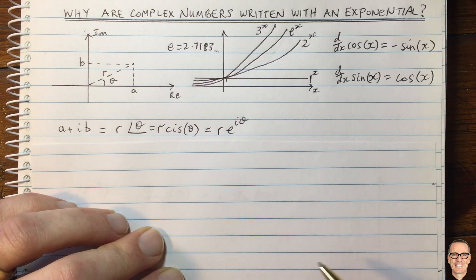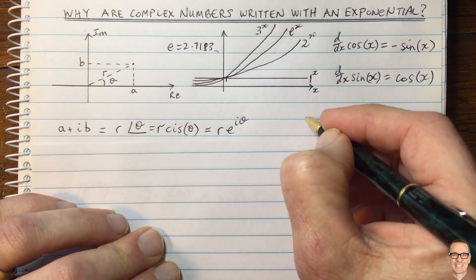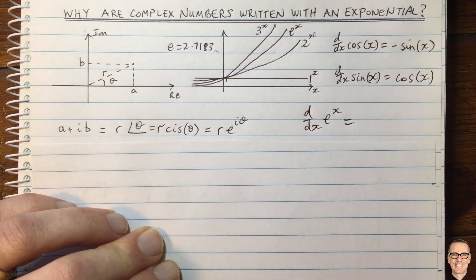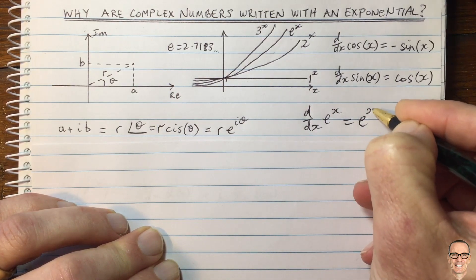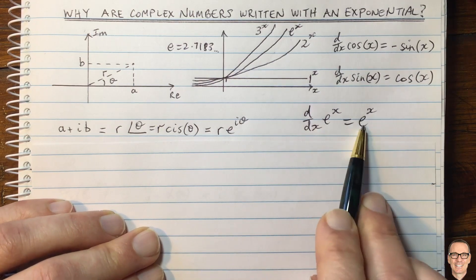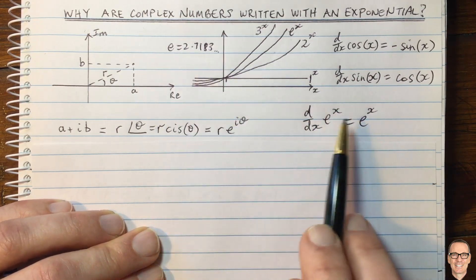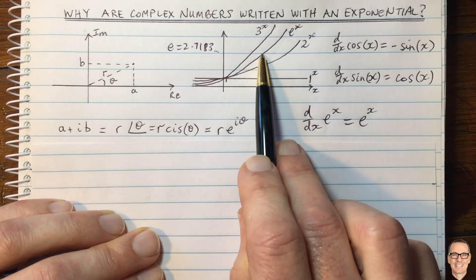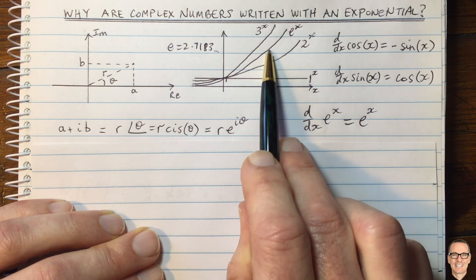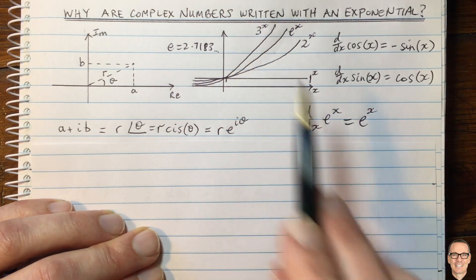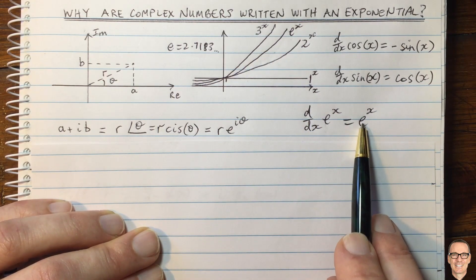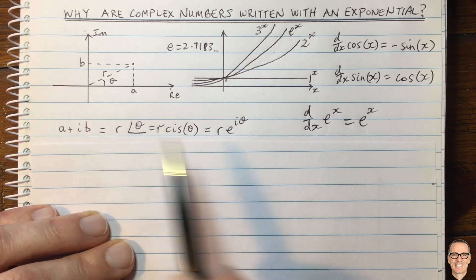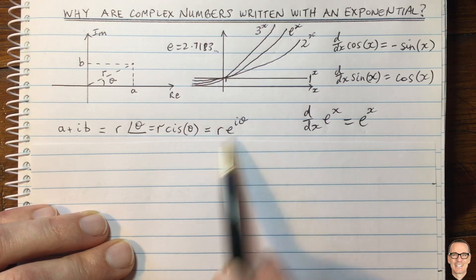In mathematics, we write that as d/dx of e to the x equals e to the x — the derivative equals the actual value of the function. That's what makes 2.7183 special, and that will be very important in linking the complex number to the representation e to the i theta.